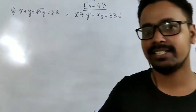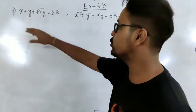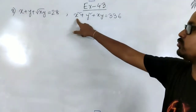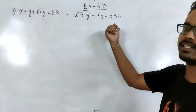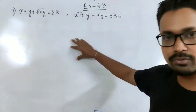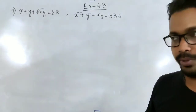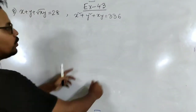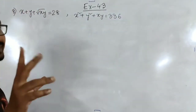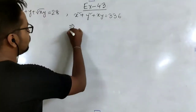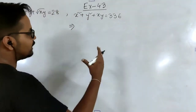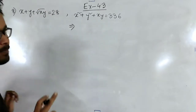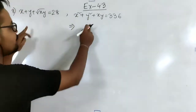Now we are on question number 8, which is another different type. The equations are: x plus y plus root xy equal to 28, and x squared plus y squared plus xy equal to 326. This is a different type and we approach it differently — this time we are not going to start with a linear equation but with the quadratic equation, correlating the two equations.